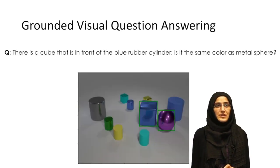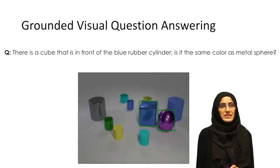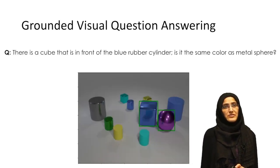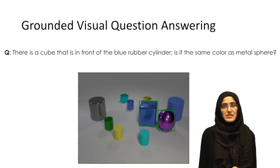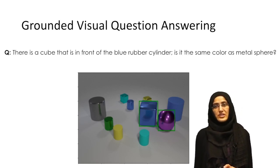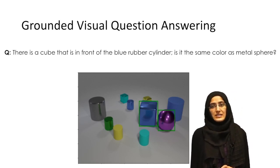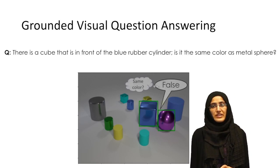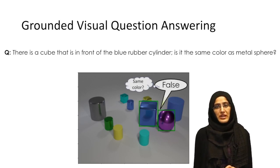Here is another example. The question is: there is a cube that is in front of the blue rubber cylinder — is it the same color as the metal sphere? These are the two objects we are talking about, and we can see that they do not have the same color.